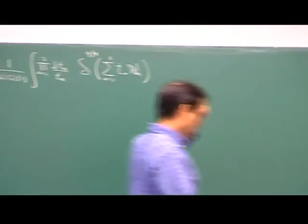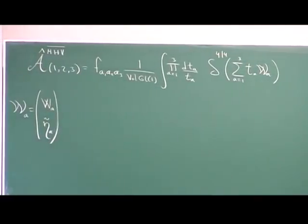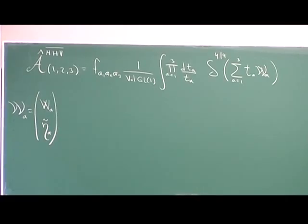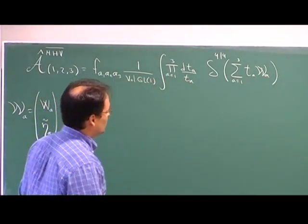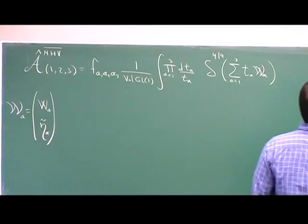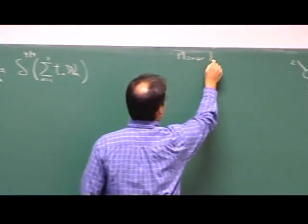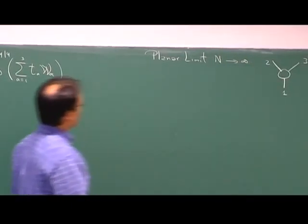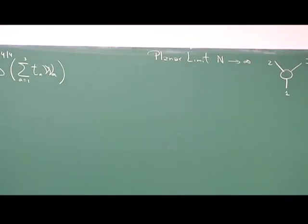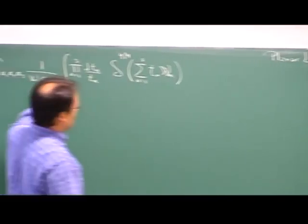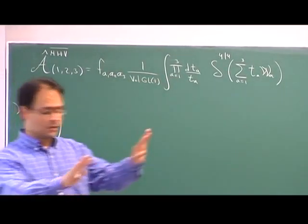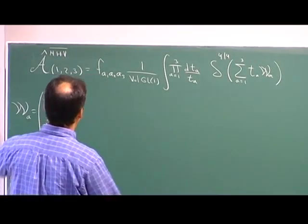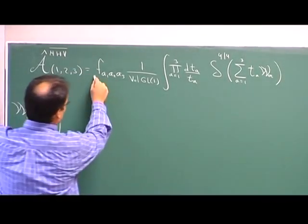Most probably in the remaining of this lecture, and perhaps at the beginning of tomorrow — we will see — we want to consider the theory in the planar limit. So we will take N to be infinite, the rank of the Lie algebra. And therefore, it would be convenient to use a color decomposition for the amplitudes. The way we are going to do it is, of course, very standard.